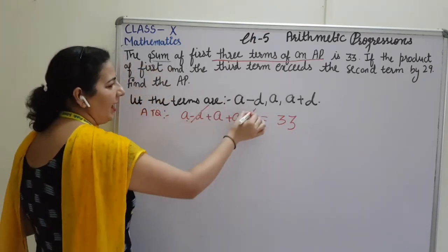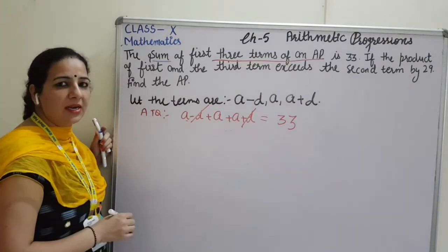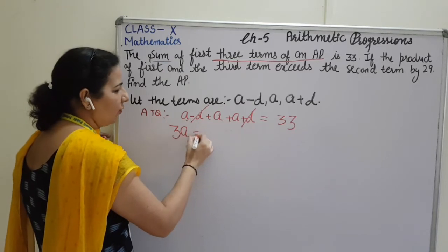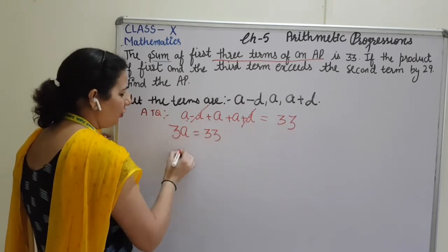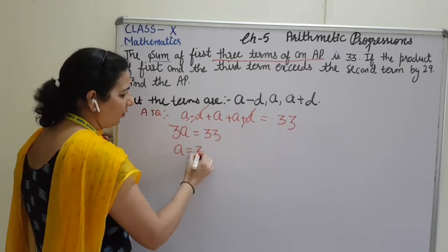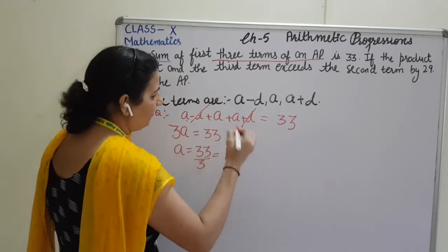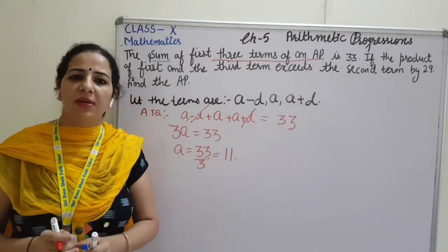Here, D and D cancel because one is plus sign and another one is of minus sign. 3A is equal to 33. So, from here, you can easily calculate the value of A and the value of A will be 11.